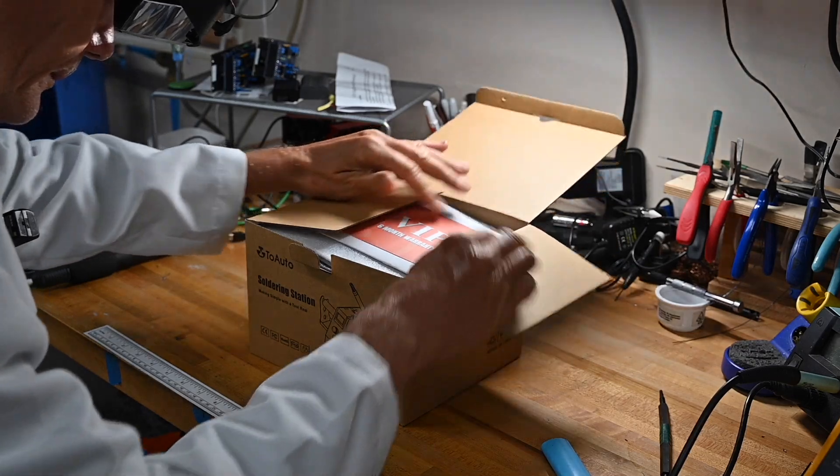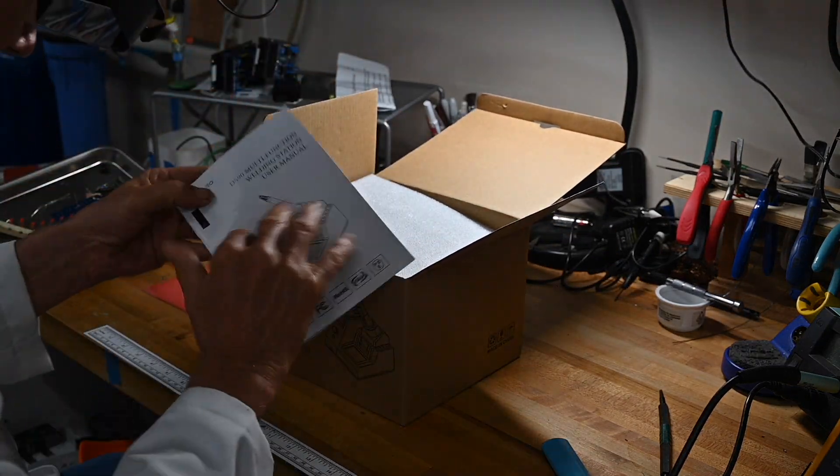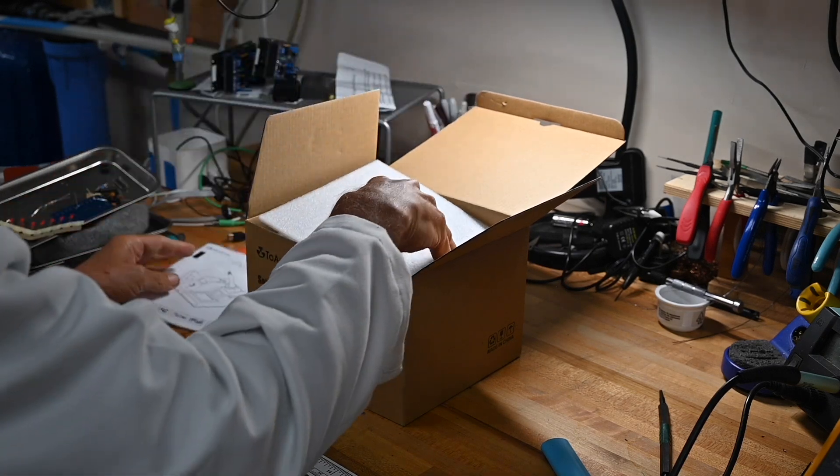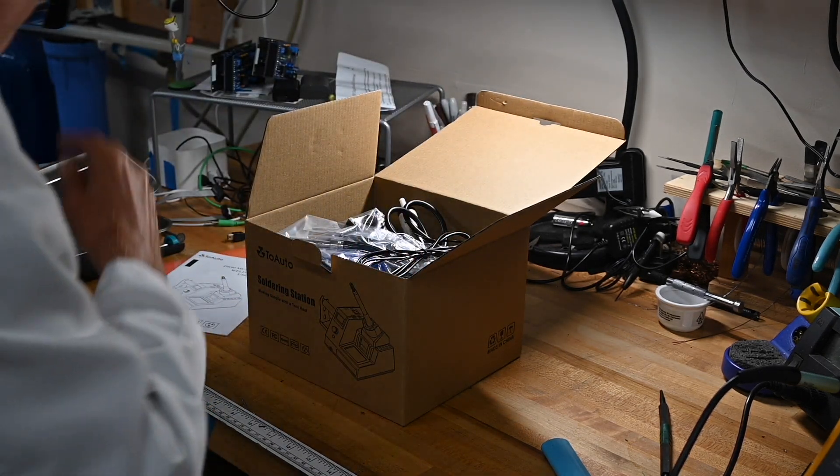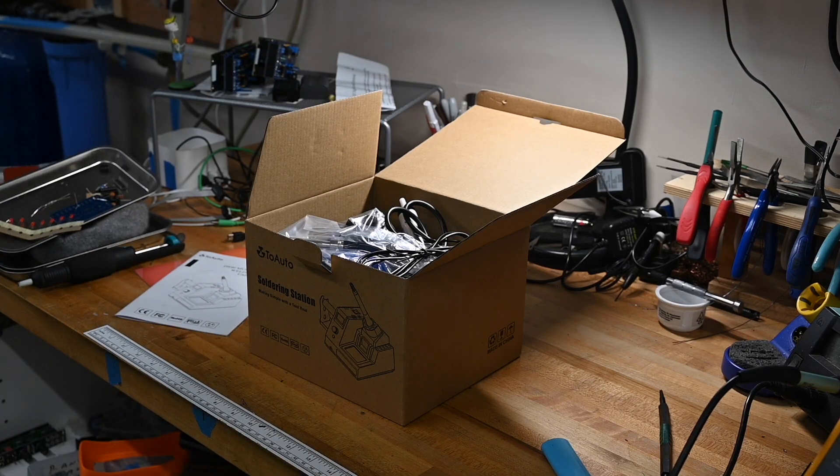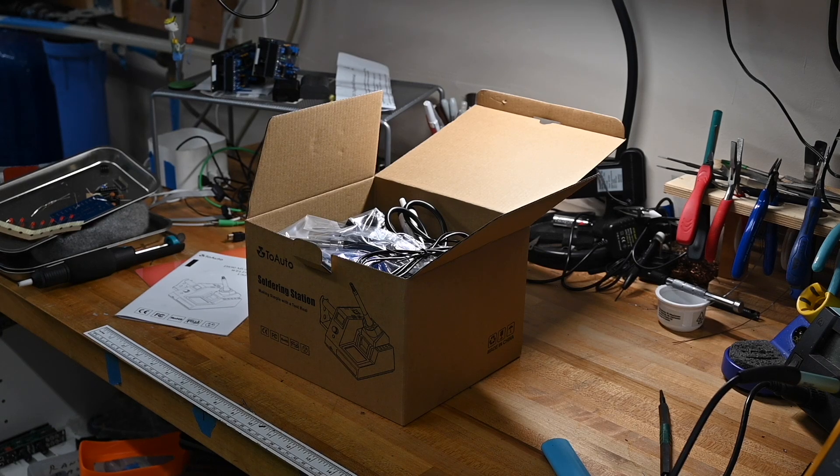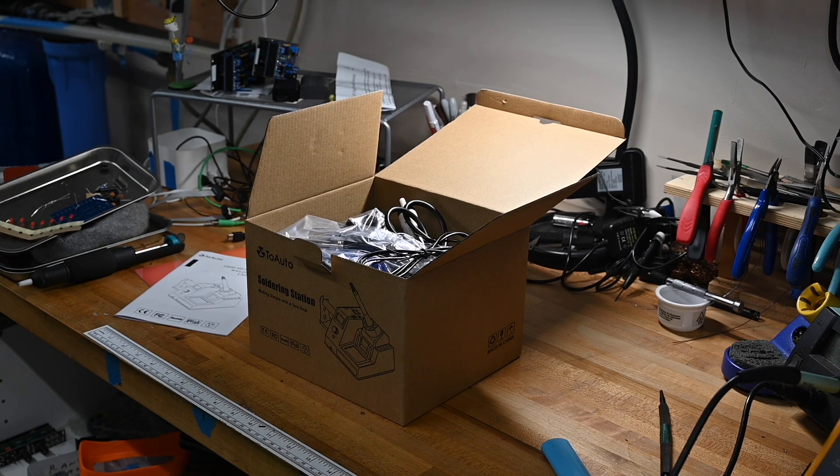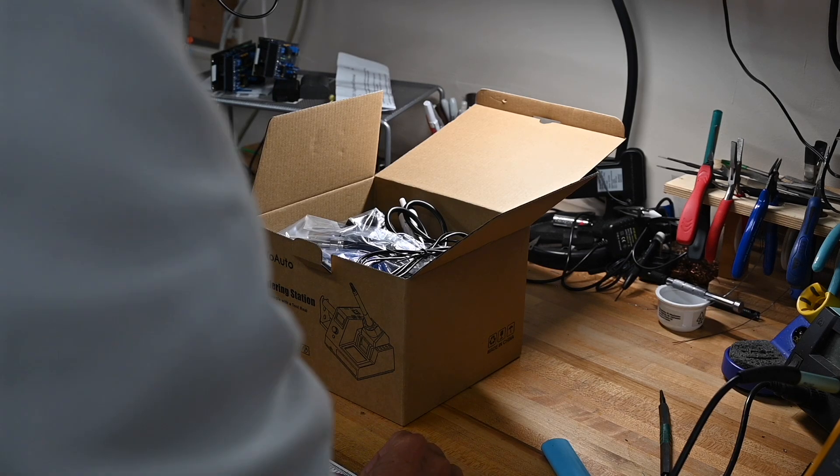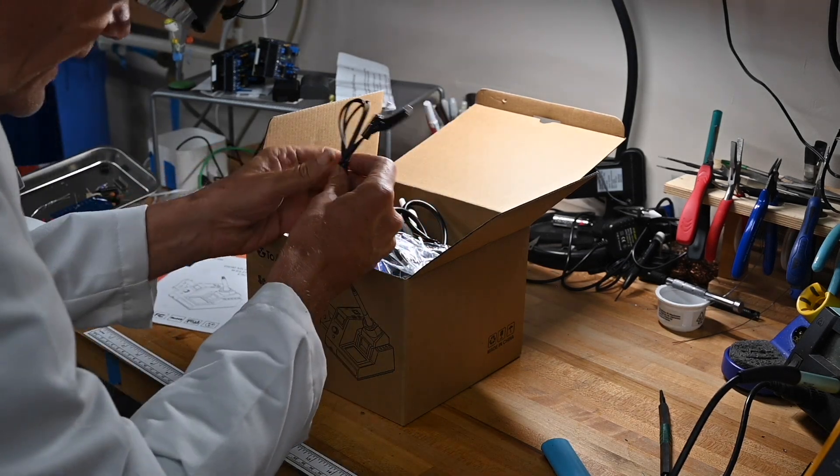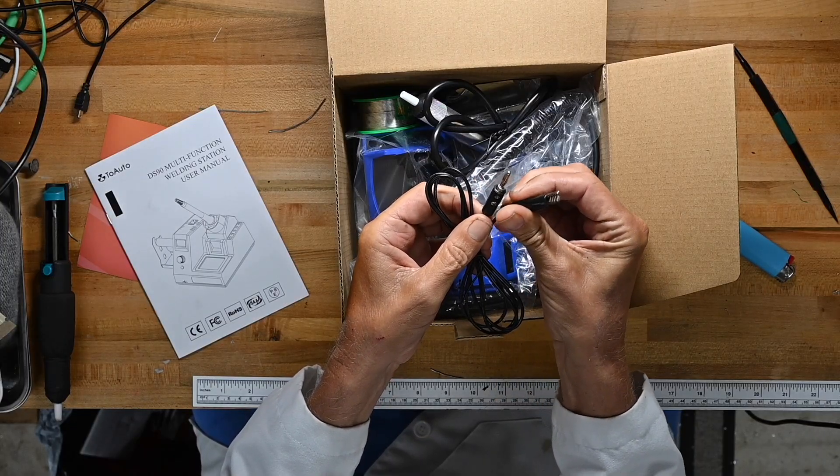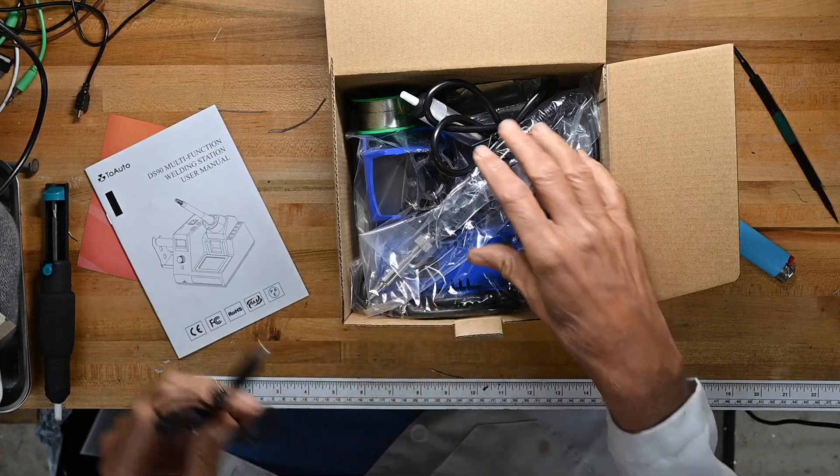We've got a six-month warranty. A little user manual with a picture. Some foam. And my garbage can's in the wrong place again. Let me go get it. Let's see what we've got. We've got this, which is a banana clip with an alligator clip on the other end. I don't know what that's for.